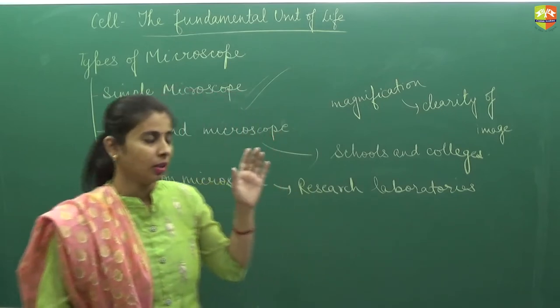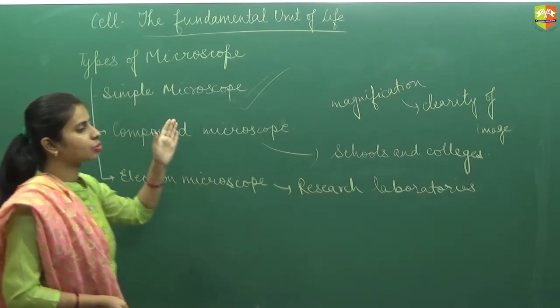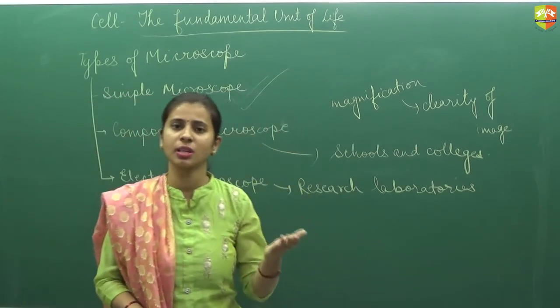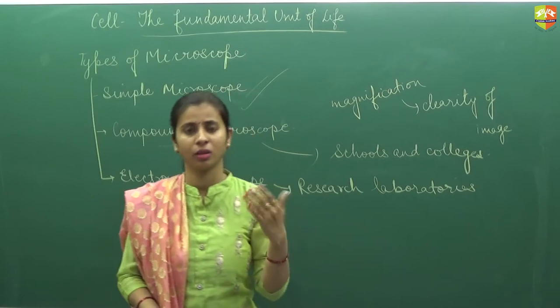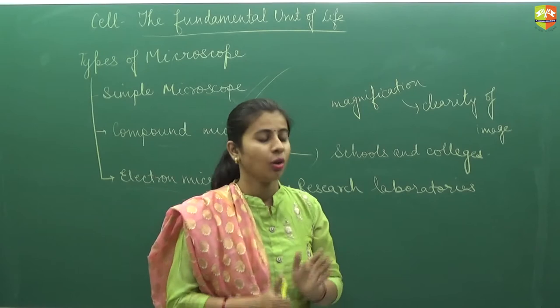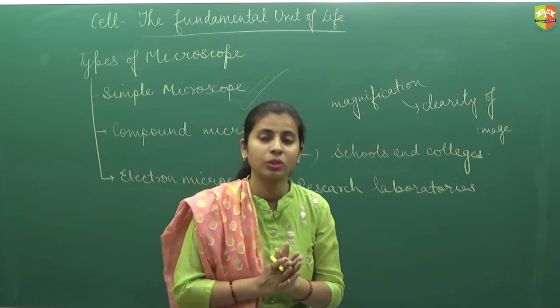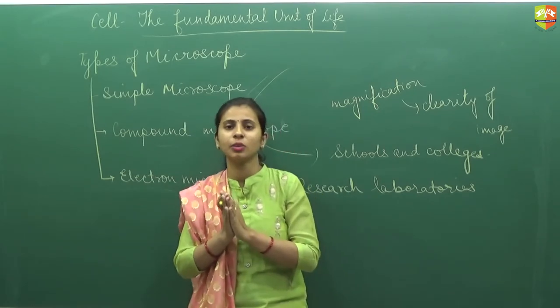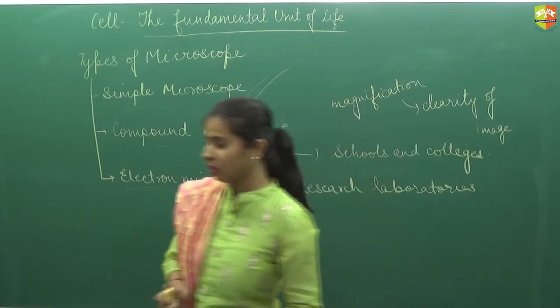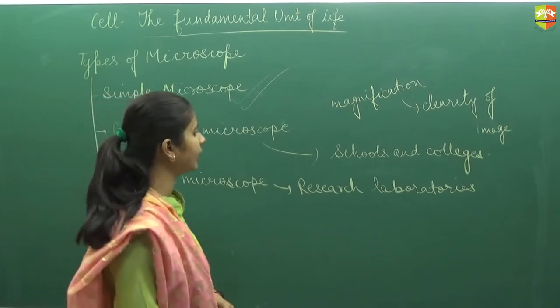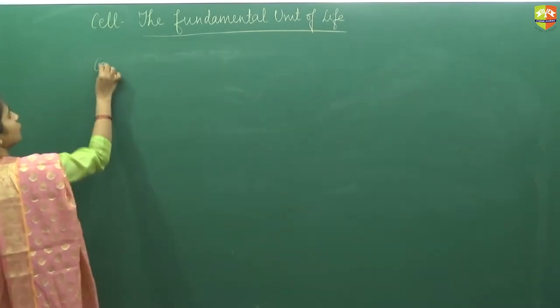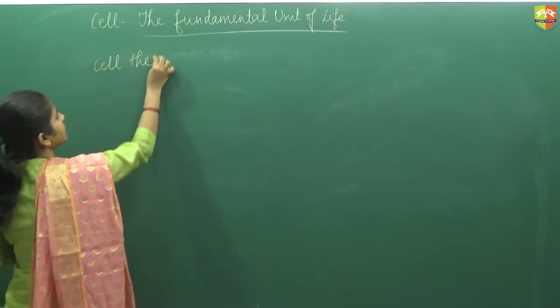After this, as we are seeing that microscope leads to so many discoveries - discovery of different type of cells, what is their structure, what is their function, how they are differentiated from various cells like animal cell, plant cells, microorganism cells and pathogen cells. So now we will study about the cell theory. Cell theory was given by the scientists Schleiden and Schwann in the years 1838 and 1839.